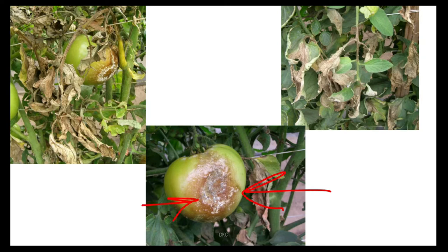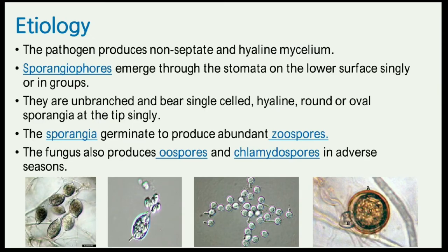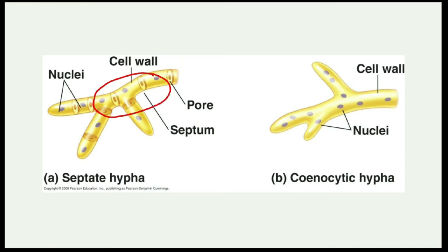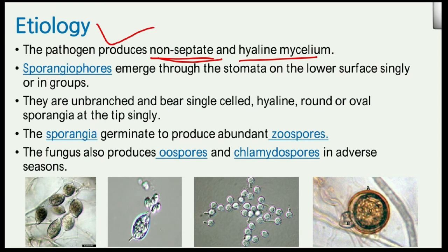White mycelium can also be seen on affected fruit. Regarding etiology: the pathogen is a lower fungus with non-septate mycelium and hyaline hyphae — unlike septate hyphae which have cross walls. Sporangiophores emerge through stomata on the lower surface, singly or in groups.